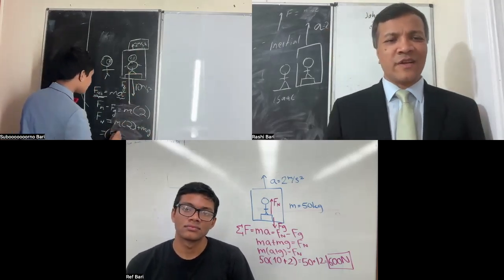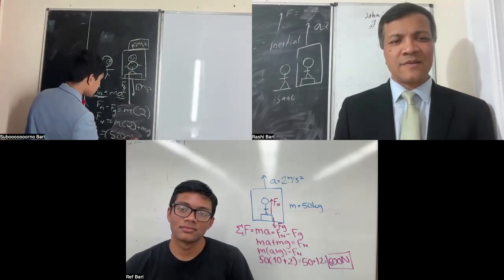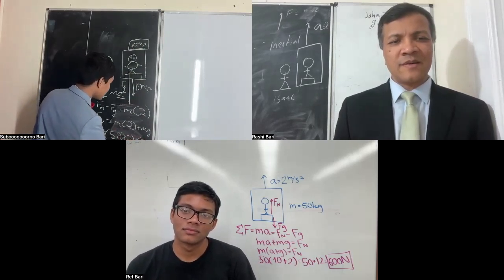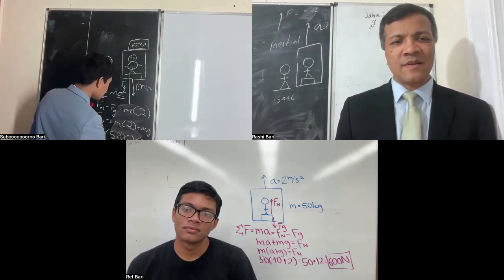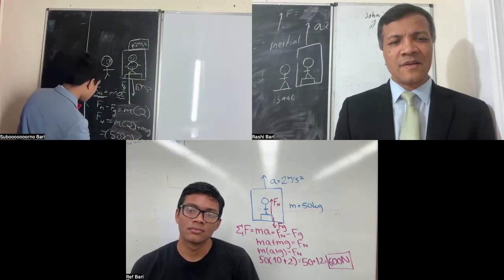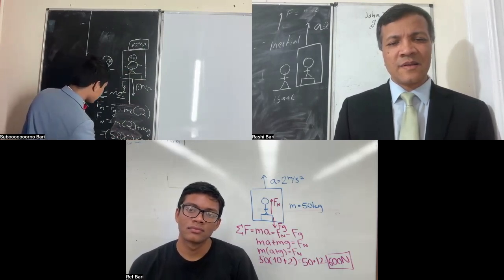That's just going to be 50 kilograms times two. His mass is 50 kilograms times 10. Which means the reading of the scale is going to be 100 plus 500.